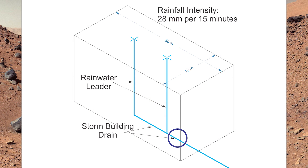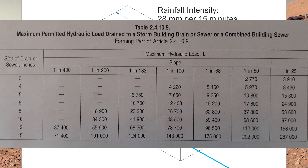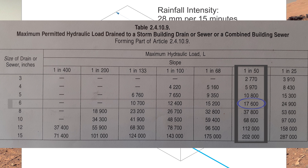Off to the right, where I have both pipes connected together, I have 12,600 liters. So once again I go down to 1:50, and I have to go down to 17,600 liters. Across we go, and it is six inch.